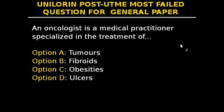Question 16: An oncologist is a medical practitioner specialized in the treatment of — tumors, fibroids, obesity, or ulcers? An oncologist is a doctor who treats cancer. Cancer is an uncontrolled growth of abnormal cells anywhere in the body, and these abnormal cells are sometimes called tumor cells. So cancers are tumors, making option A the answer.